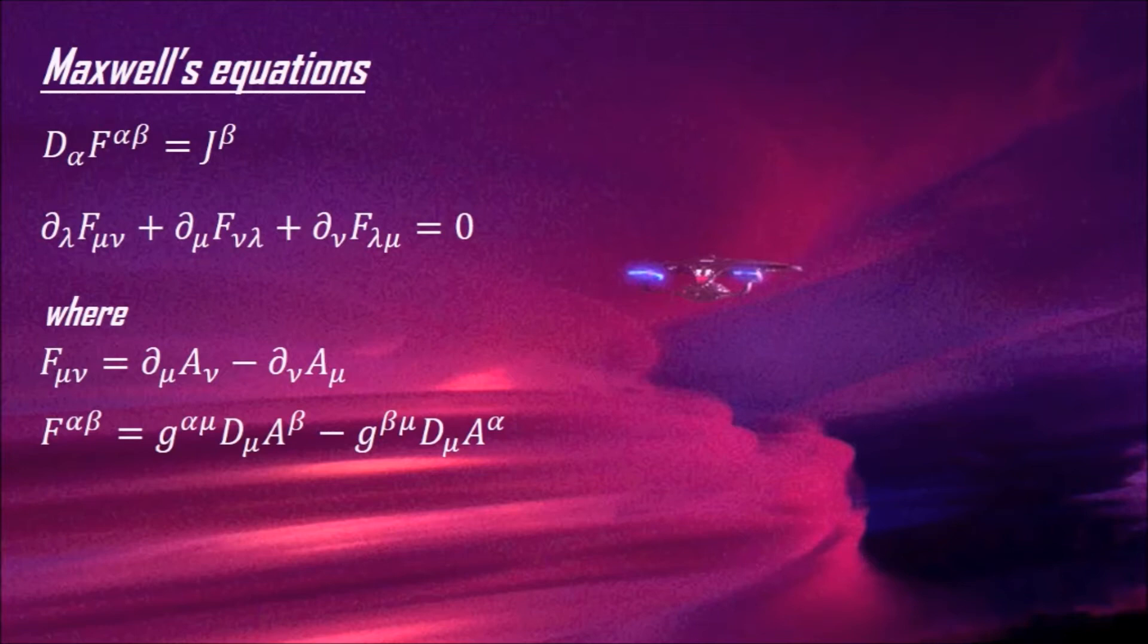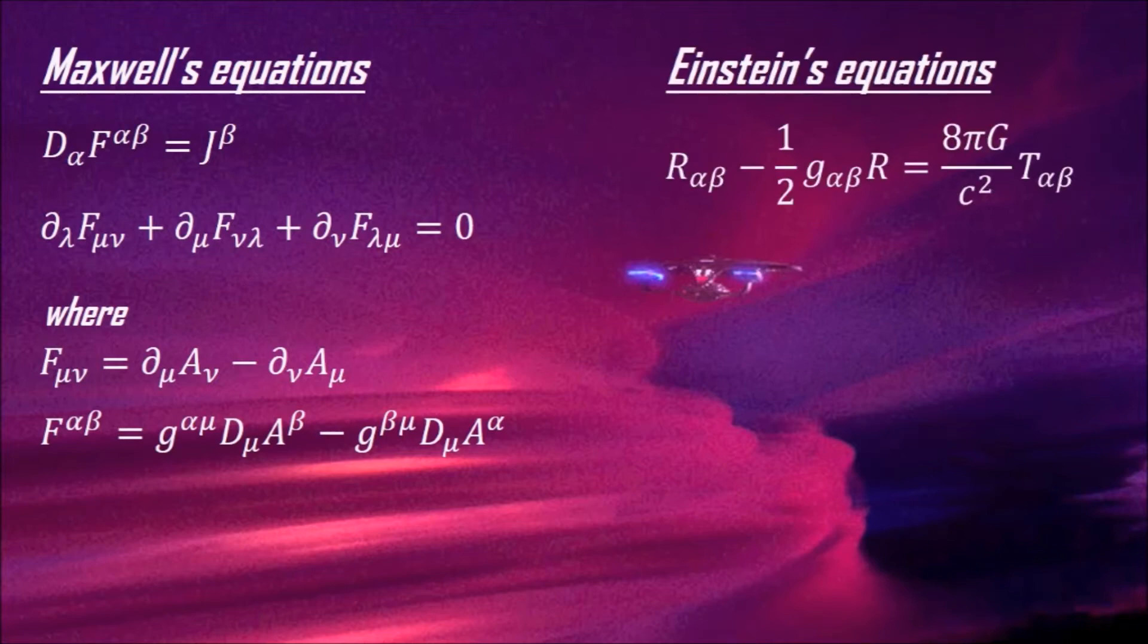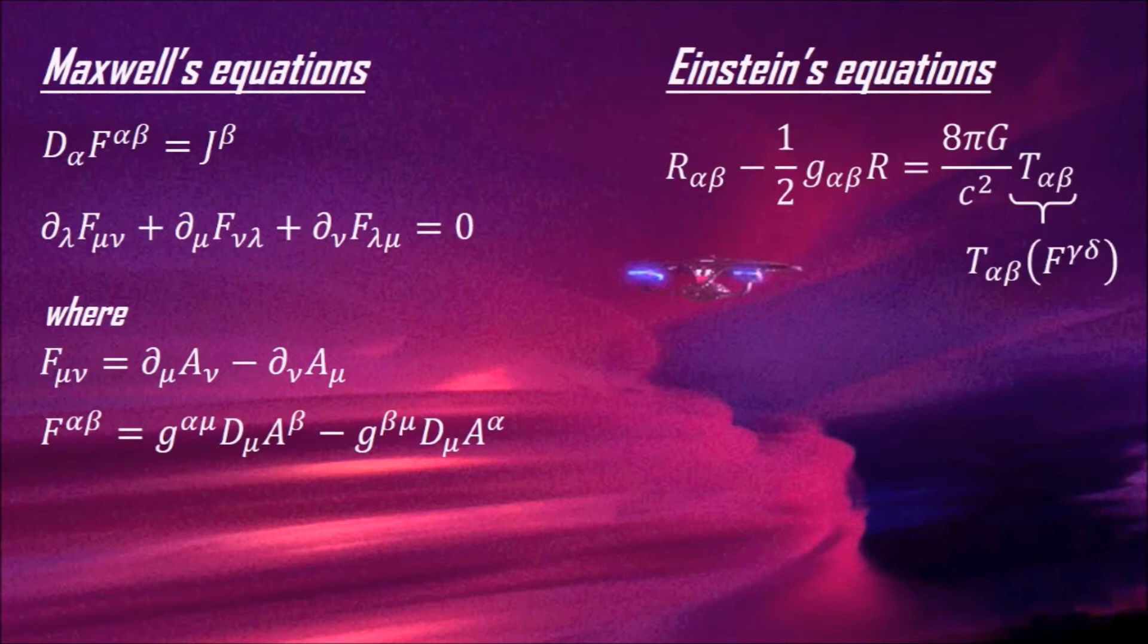However, if we wanted to know how the fields themselves contribute to the shaping of spacetime, and hence to the shaping of the metric, we would have to solve the Einstein field equations, where the energy-momentum tensor on the right-hand side comes from the electromagnetic fields themselves. So, in order to solve this set of equations, we need to know what this thing is for the electromagnetic fields.